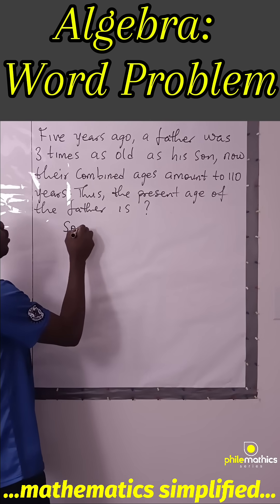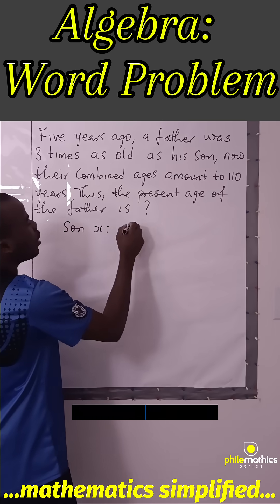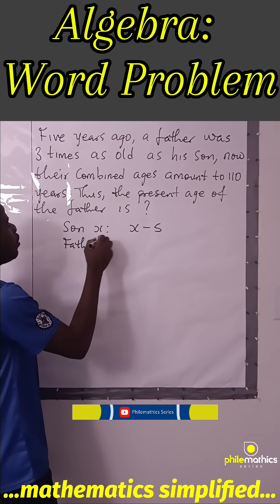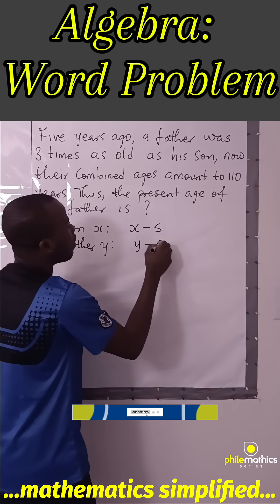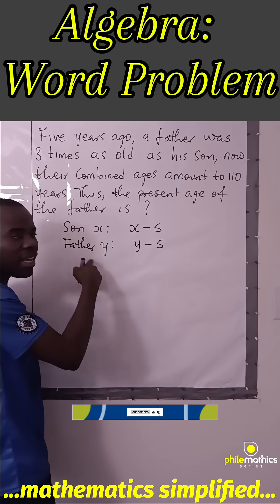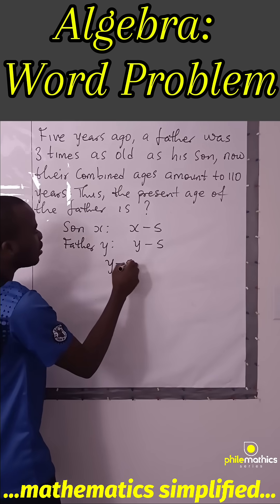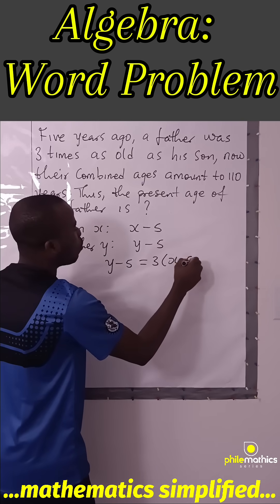If the age of the son now is X, five years ago the age of the son was X-5. And for the father, if it is Y, five years ago it was Y-5. And the father's age is three times the son's age, meaning the father's age is three times the son's age five years ago.